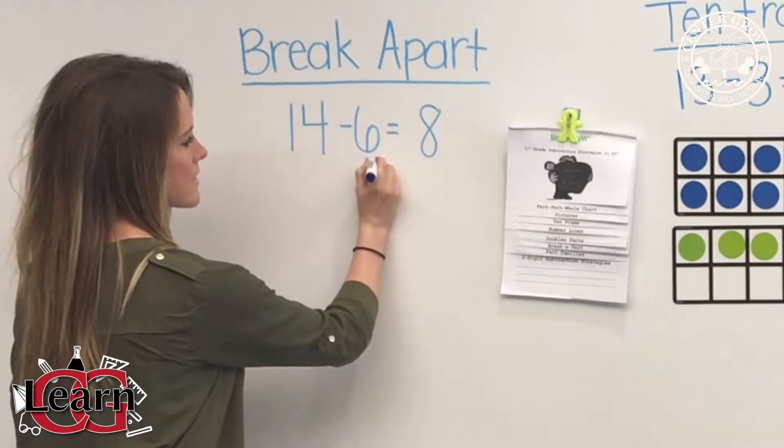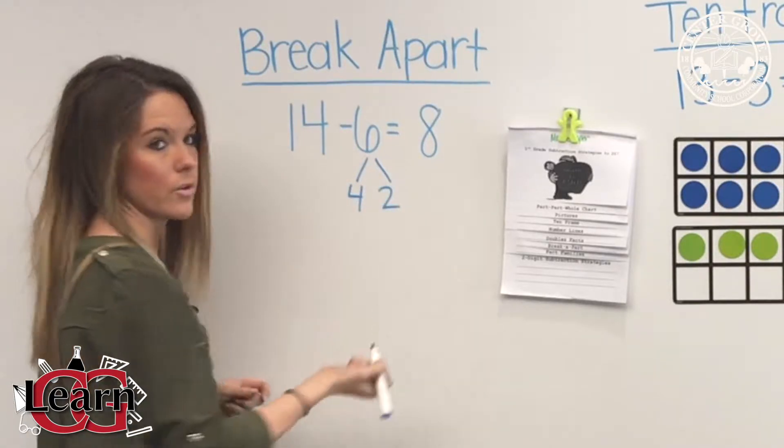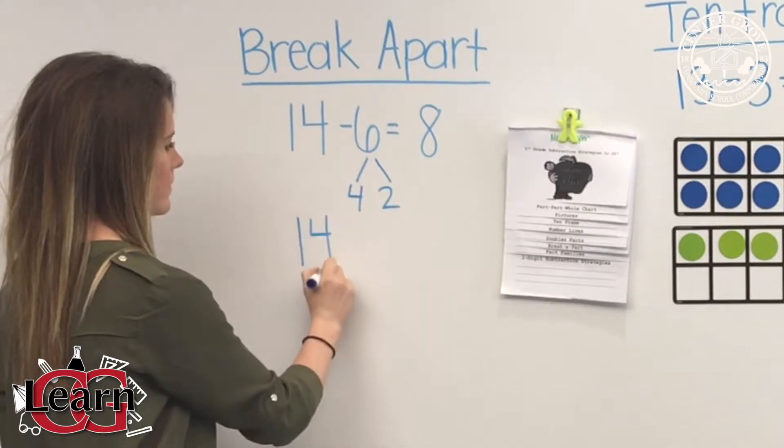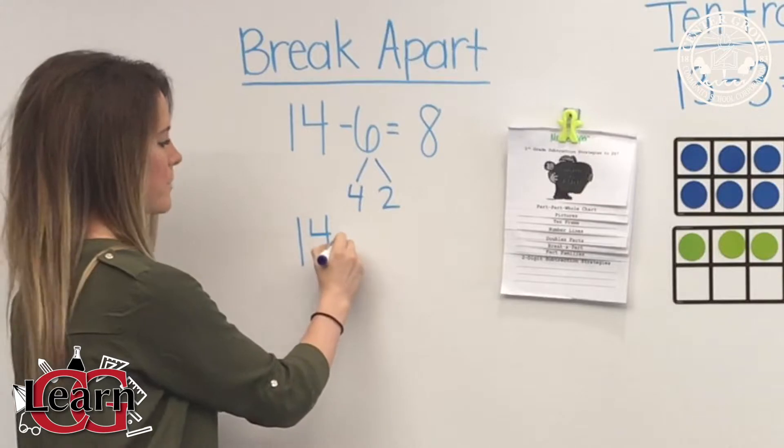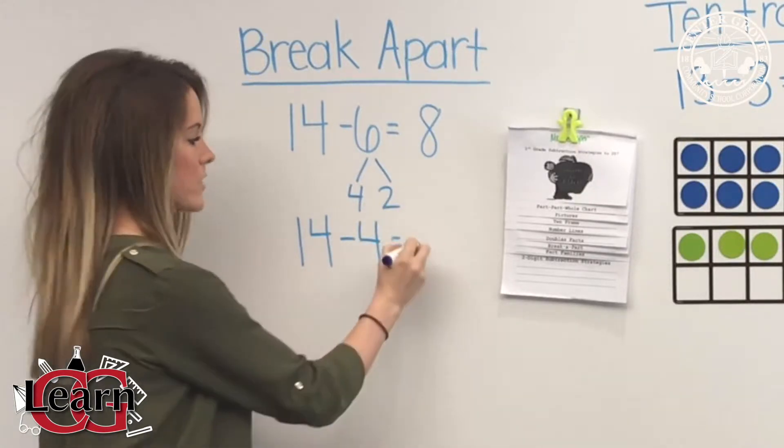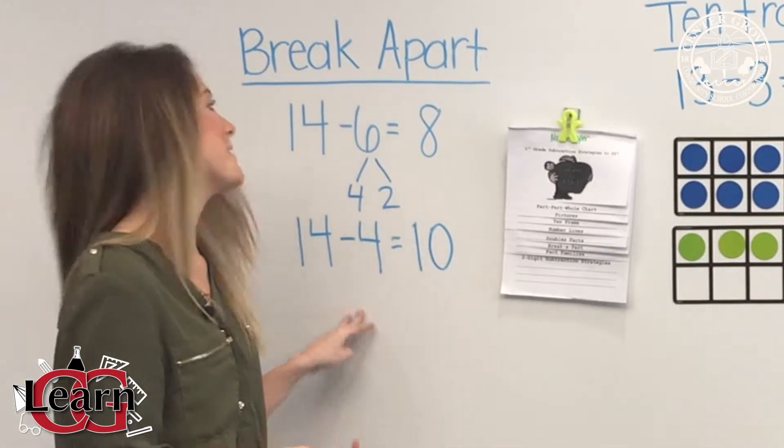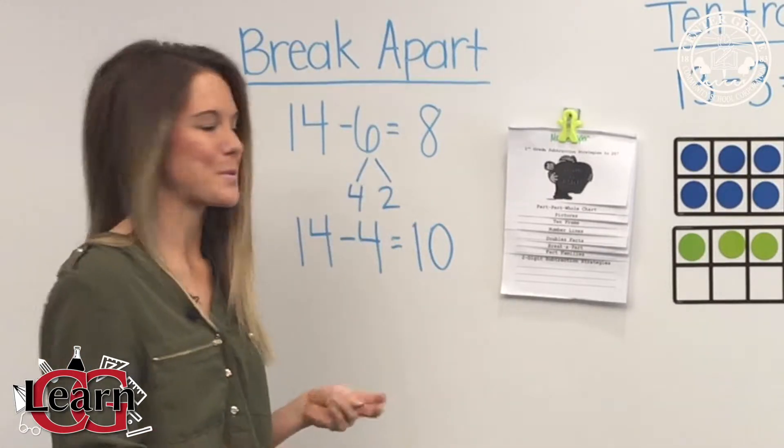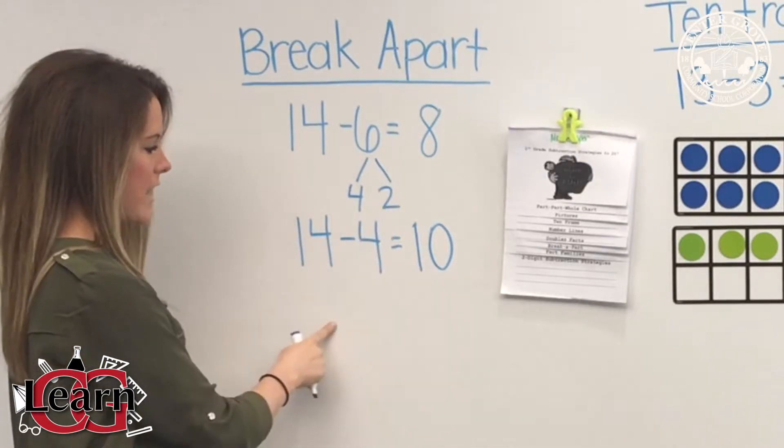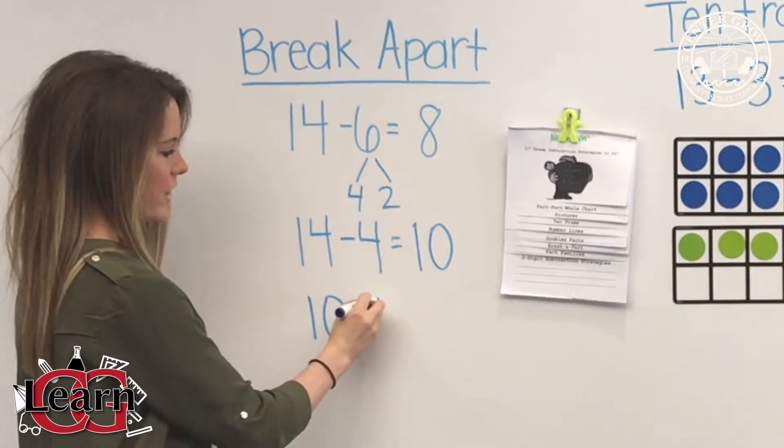Tens are a basic number, kind of like ten zeros and five. So I break down the 6 to a 4 and a 2, because then we take our 14 and we subtract it from our first number, 14 minus 4, and then that's when it's going to equal 10. But we know we can't stop there because 14 minus 6 doesn't equal 10.